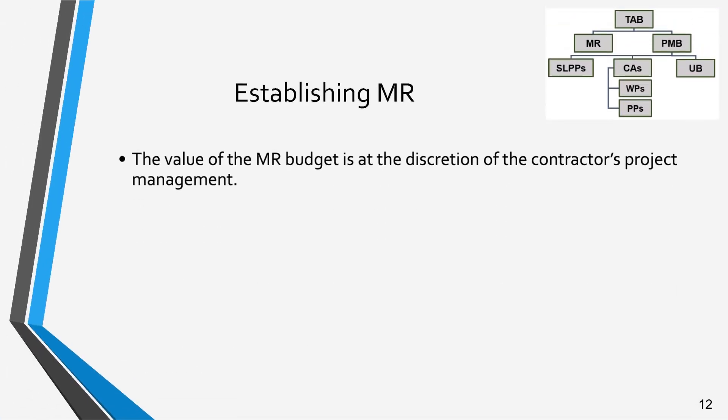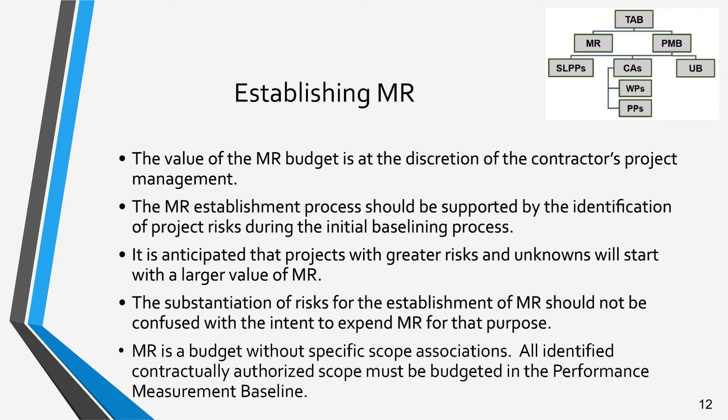The MR budget is initially established during the early baselining period after contract authorization. While the value of the MR budget is at the discretion of the contractor's project management team, the process should be tied to the identification of project risks and overall risk levels identified. It is anticipated that projects with greater risk and unknowns will have a larger reserve budget. However, there is no requirement that the application of the MR will be limited to the identified risks. In fact, if a contractor does this, it may be an indication that well-defined and probable scope has been left out of the baseline.